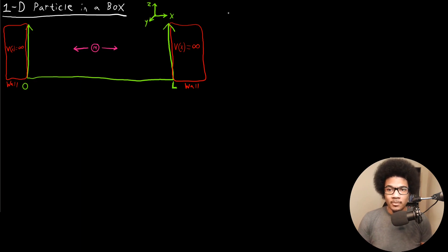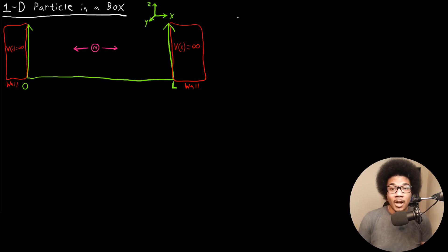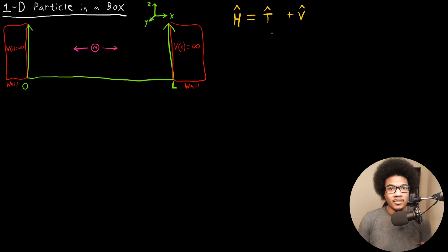Whenever we have a quantum system, we're going to physically describe the problem, and then the point from there is to define the problem, define the forces or the energies at play via the Hamiltonian, and solve for an acceptable wave function for that problem. Our Hamiltonian operator in general is just a sum of the kinetic energy plus the potential energy. These are going to come from your physical problem — what's the kinetic energy contribution and what's the potential acting on your particle.